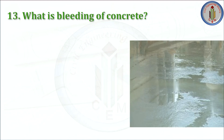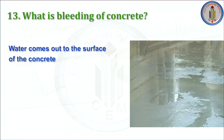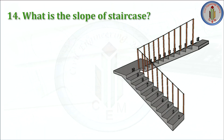Next: what is bleeding in concrete? Due to bleeding, concrete loses its homogeneity. The prime factor for bleeding in concrete is a high water-cement ratio — water comes out to the surface of the concrete. It is a form of segregation. A high water-cement ratio weakens the concrete and leads to excessive bleeding.